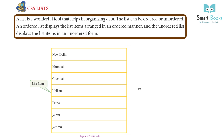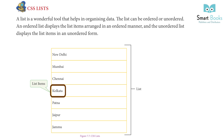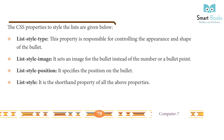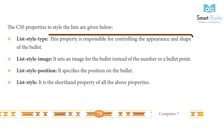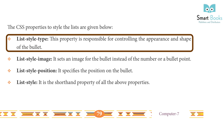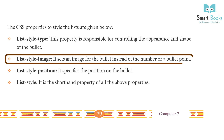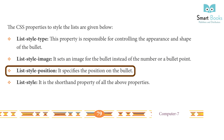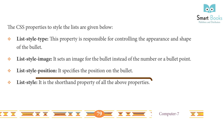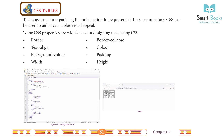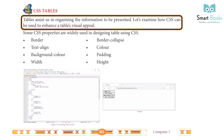CSS list: a list is a wonderful tool that helps in organizing data. A list can be ordered or unordered. The CSS properties to style a list are: list-style-type, which controls the appearance and shape of the bullet; list-style-image, which sets an image for the bullet; list-style-position, which specifies the position of the bullet; and list-style, which is the shorthand property for all of the above.